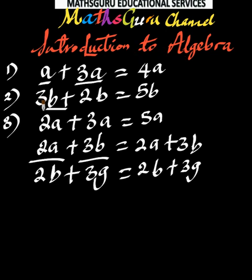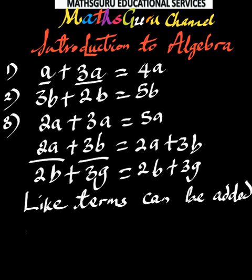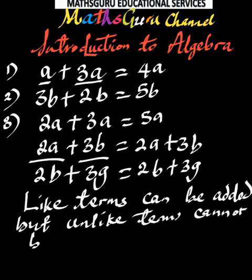And that leads us to the first rule or law of algebra. Like terms can be added. But unlike terms cannot be added. Like terms can be added. But unlike terms cannot be added. We have A and 3A here. They are like terms, so we add them together. 3B and 2B here. They are like terms because they are both expressed in B. So we have 5B. 2A plus 3A will give us 5A. Now, 2A plus 3B. We have A here, apple and bags. They cannot be added together like that to give us 5. So we express them differently the way it is given. And 2B plus 3G will be equal to 2B plus 3G because we cannot add them.